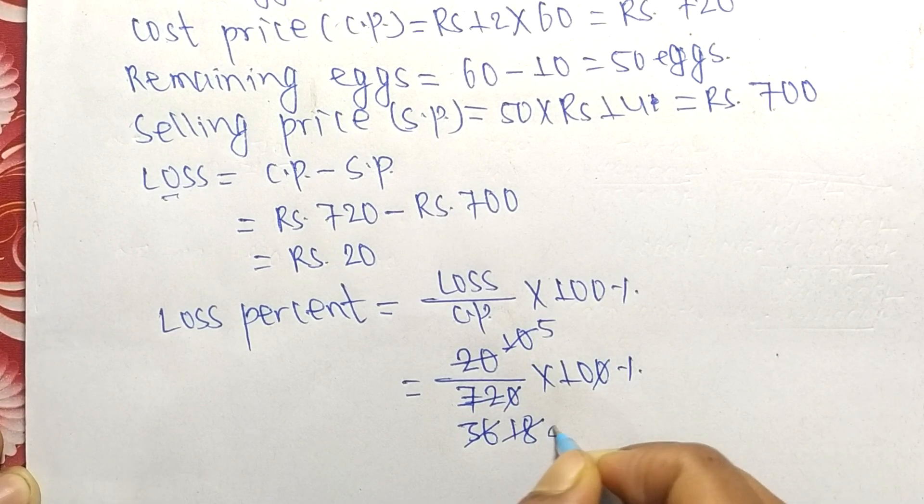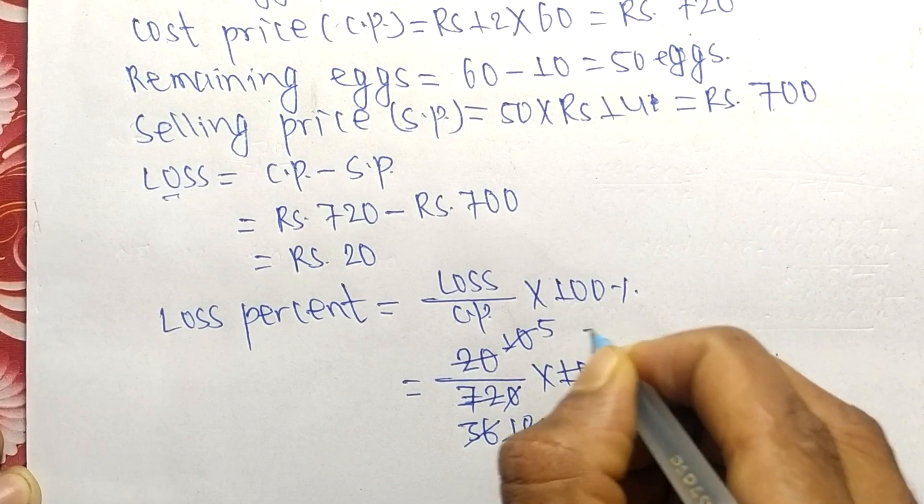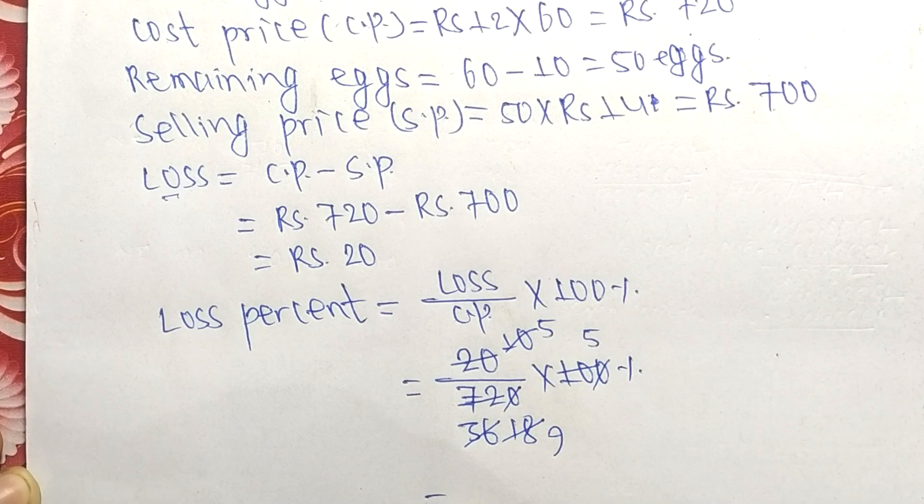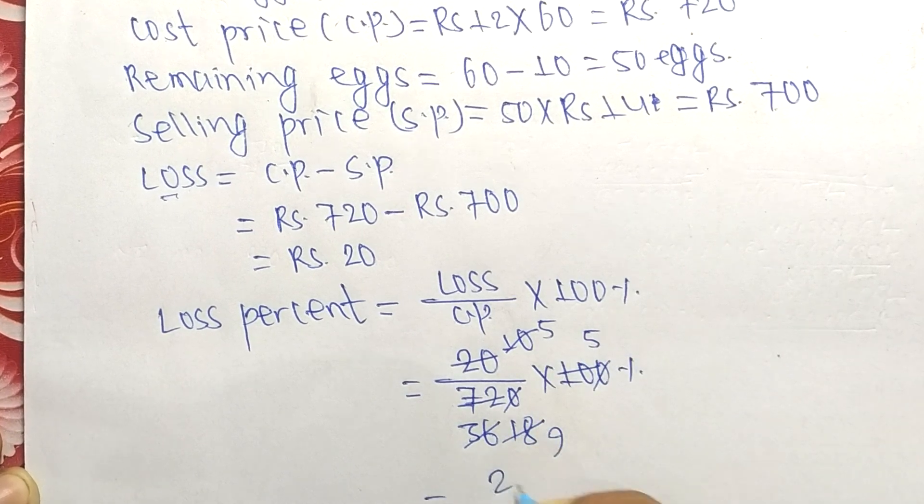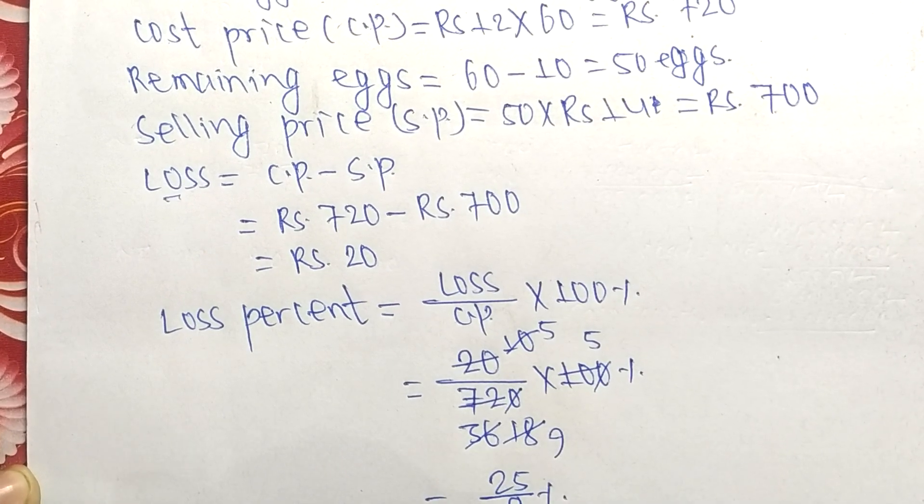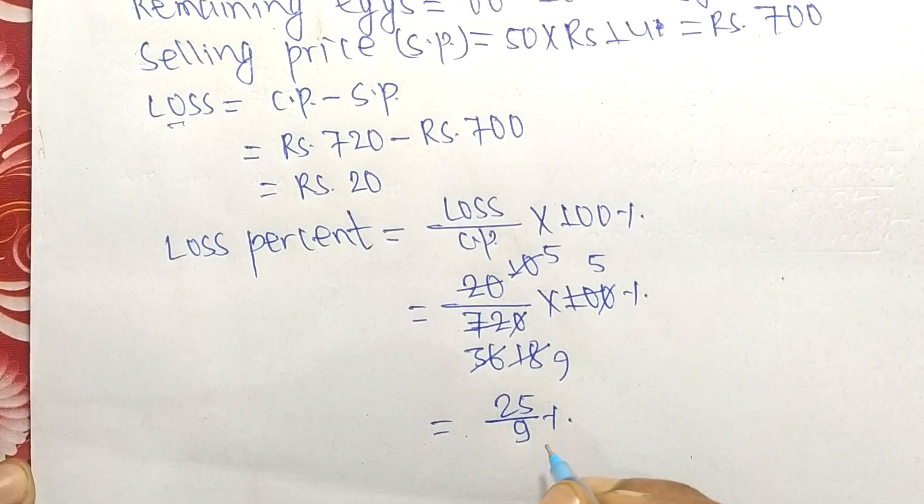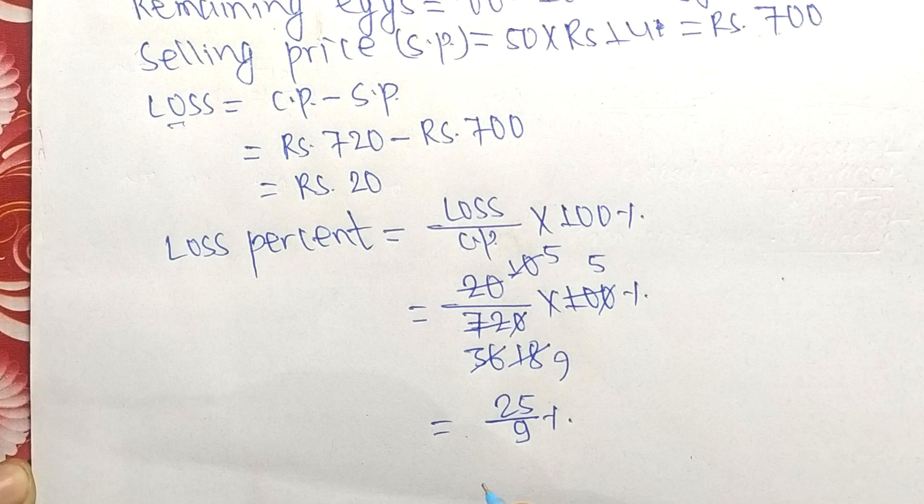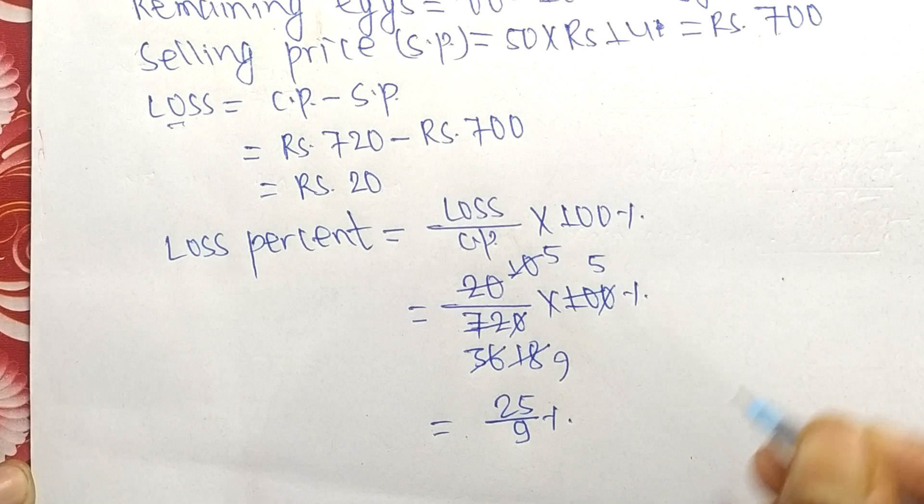2 times 9 = 18, 2 times 5 = 10, so it is (5 × 5) / 9 = 25/9 percent. This is the total loss percent. We can convert it to decimal also.